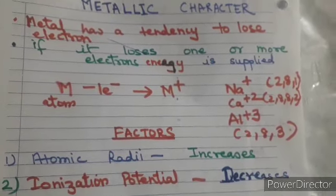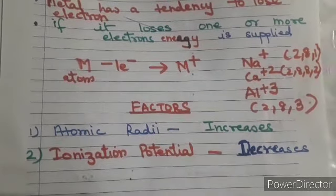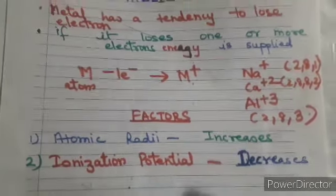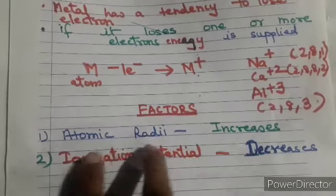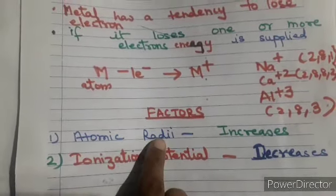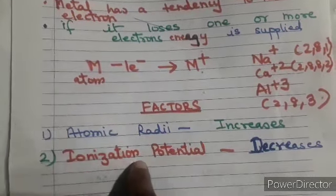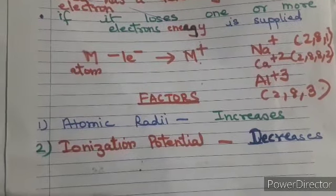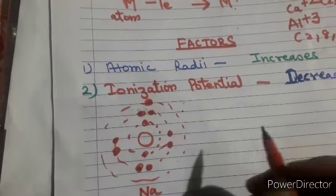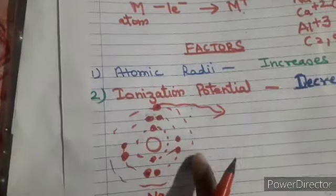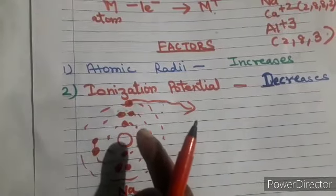Now we'll see the factors responsible for metallic characters in metals. The first is atomic radius or atomic size, and the second is ionization potential. When the atomic size is large, ionization potential is less — you need very little energy to remove the electron from its outermost orbit. Let's make a diagram to understand this. Here I have made the structure for the atom of sodium, and you need energy to remove the electron from its outermost orbit.